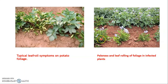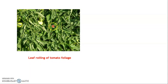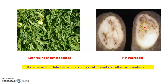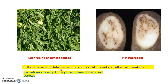In tomatoes, similar leaf rolling of foliage is observed. In tubers, net necrosis develops because the phloem is impaired by the virus, preventing storage carbohydrates from reaching the tubers. Callose accumulates in stems and tubers, causing net necrosis, which reduces the quality of potato tubers. Necrosis may also develop in the phloem tissue of stems and petioles.